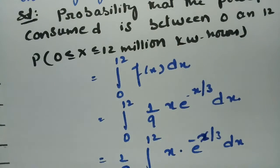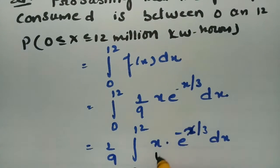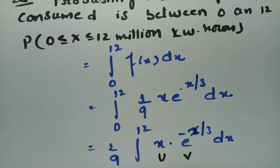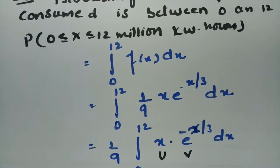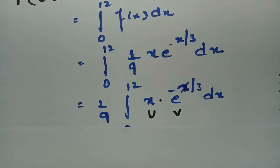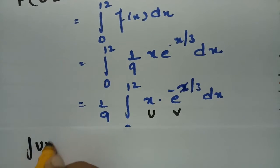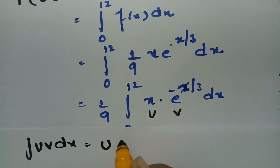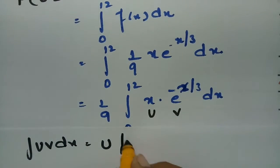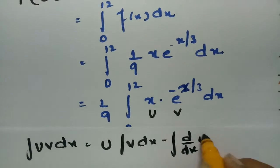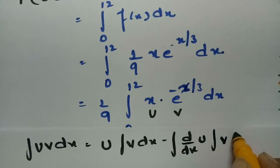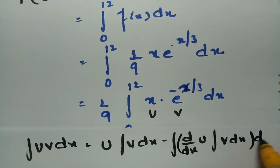This is integration by parts where u = x and v = e^(-x/3). The formula for integration by parts is: ∫u·v dx = u·∫v dx − ∫(derivative of u · ∫v dx) dx.